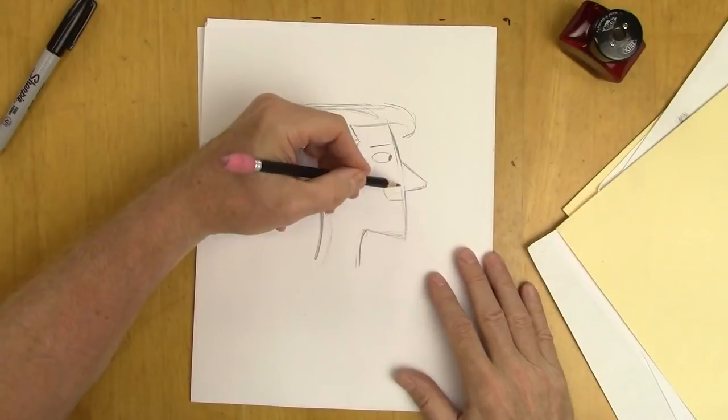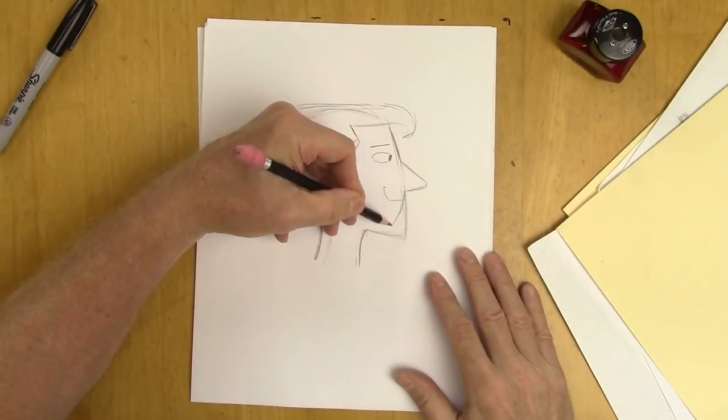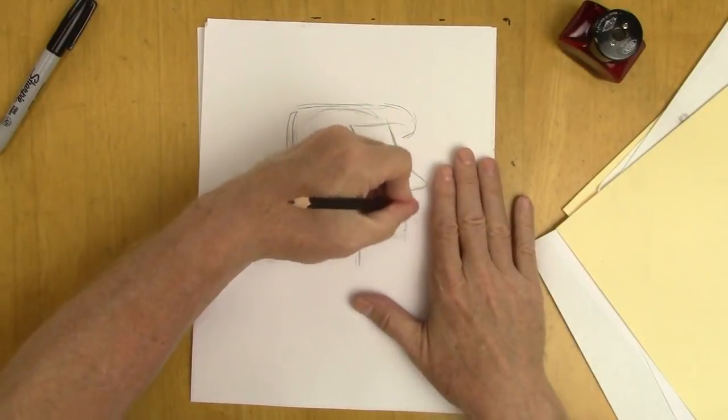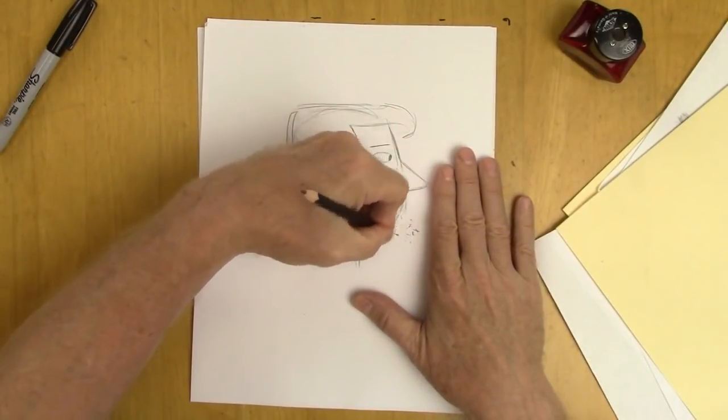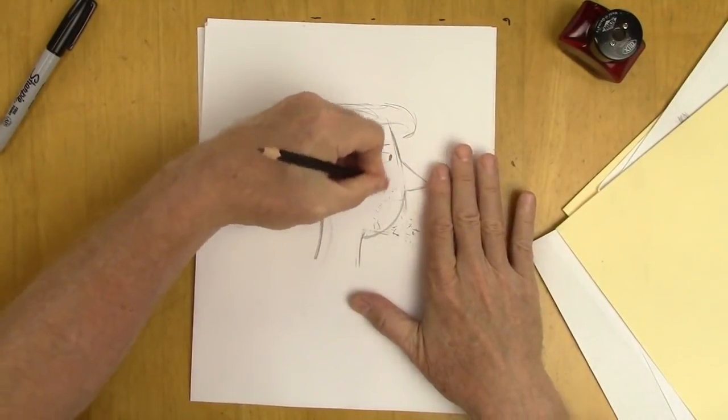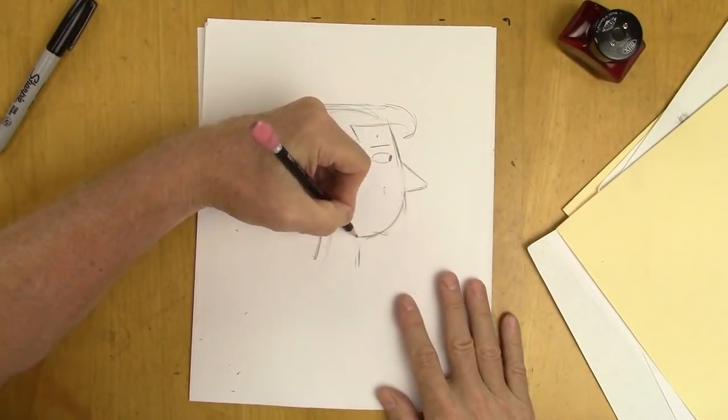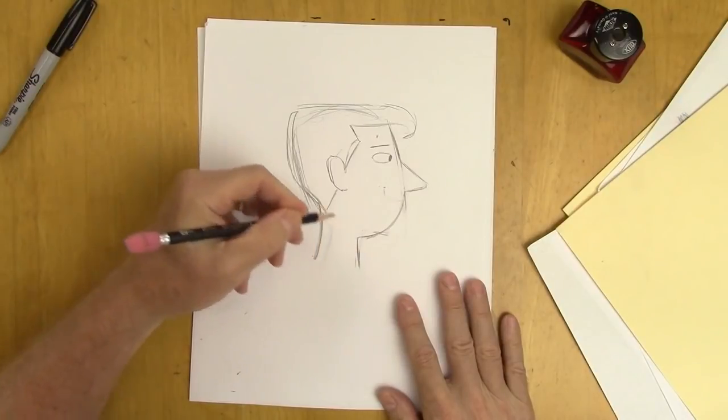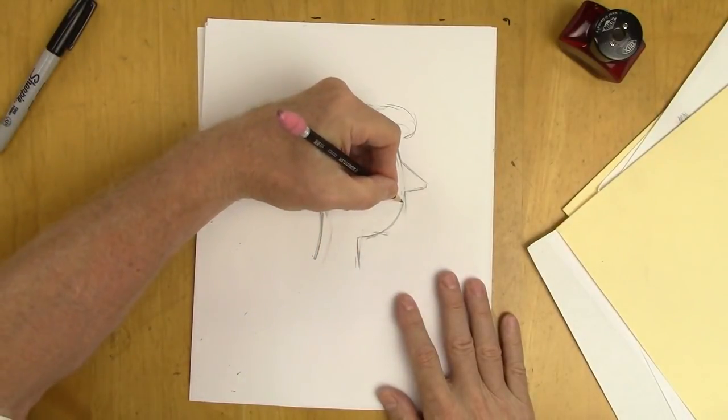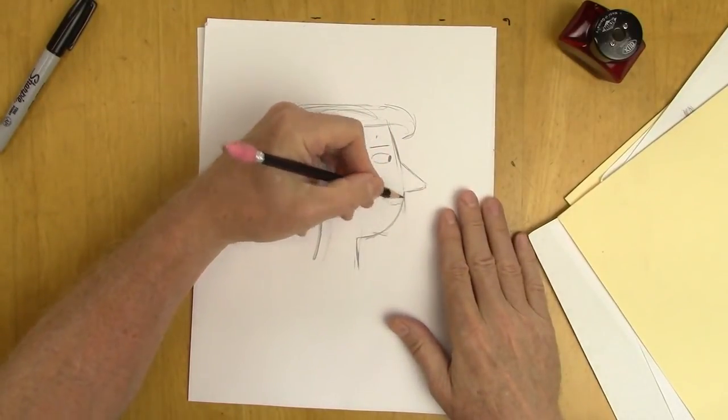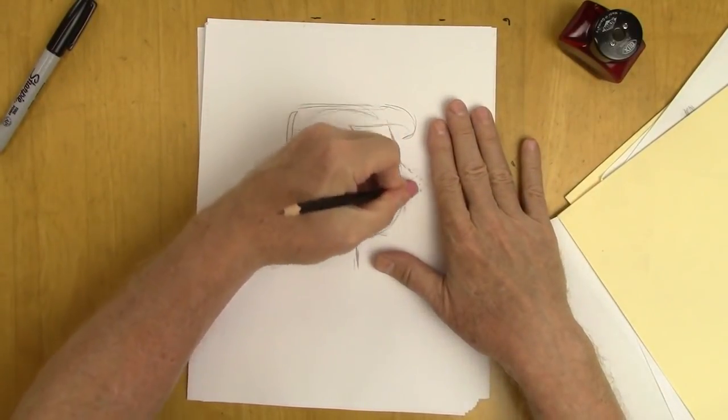So here I'm going to bring this here, get rid of that chin, make him a chinless wonder. Bring it in here, a little bit thinner neck and a little smaller mouth. See that? And now, instead of such a pointy nose, because he's got this rounded chin, just kind of round it off a little bit.